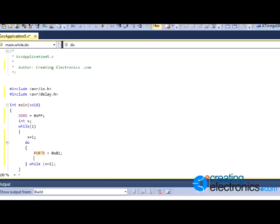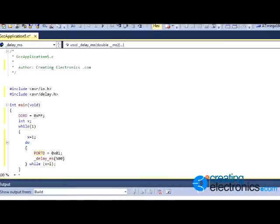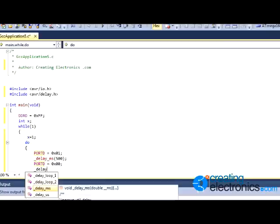Then we want a delay, so _delay_ms and for this I've used 500. And then we'll obviously want to turn it back off again to create the flashing effect, so PORTD = 0x00, and then another delay exactly the same of 500 milliseconds.